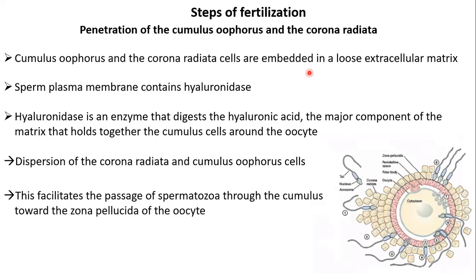How do those sperm cells penetrate through the cumulus oophorus and the corona radiata cells? Those cumulus oophorus granulosa cells have an extracellular matrix between them, and this is a loose extracellular matrix containing hyaluronic acid.